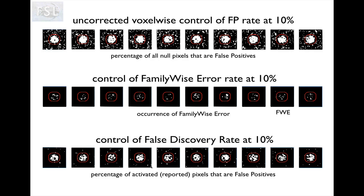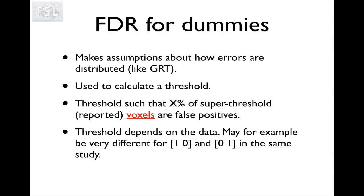You can see FDR as a different trade-off between sensitivity and specificity. Interestingly, in the case where the null hypothesis holds everywhere such that we don't report any true activations, FDR falls back and becomes close to the family-wise error rate. False discovery rate does make assumptions about how errors are distributed — they need to be normally distributed. We can use it to calculate a threshold and it's surprisingly easy. The threshold depends on the data, unlike all other methods where the threshold is independent of the data — you can have very different thresholds for different contrasts in the same study.